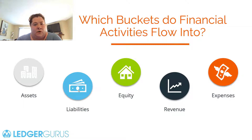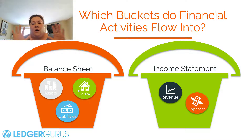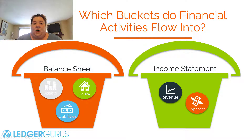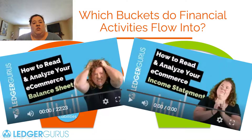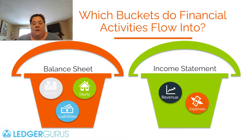The reason why that's important is because depending on which major category you choose will determine which financial statement those transactions flow to. Assets, equities, and liabilities all flow onto the balance sheet. Revenue and expense categories all fall into the income statement. If you haven't watched our video yet on the balance sheet and the income statement, I highly recommend it — it'll help all of this come together and you'll understand what you're trying to accomplish.